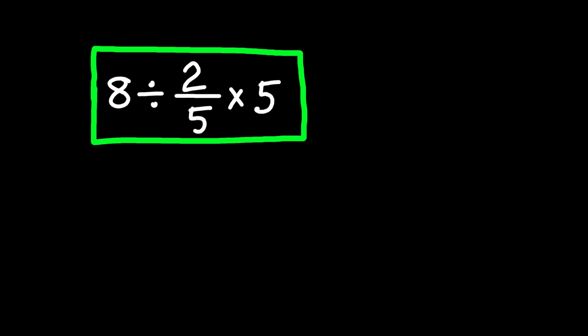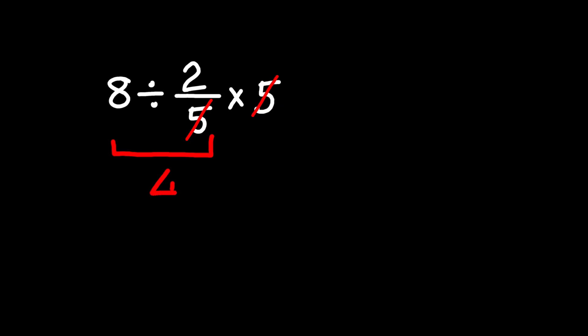Now, the first thing people do is try to be clever. They see that 2 over 5 times 5 looks like it cancels. So they go, oh, that's just 2. Then it becomes 8 divided by 2, which is 4. Simple. Or is it?